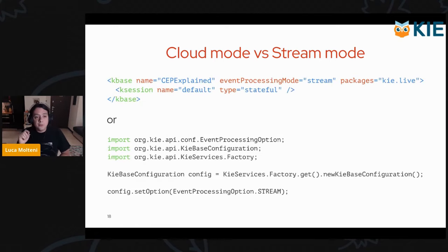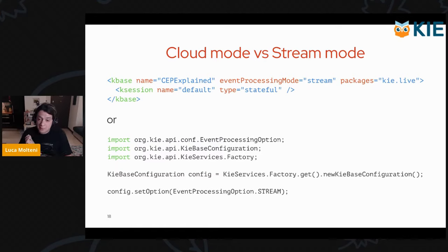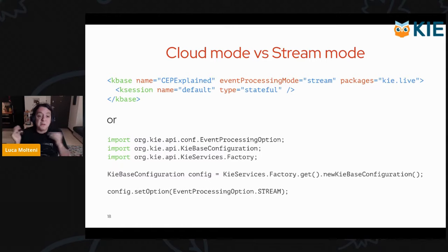To configure cloud mode or stream mode, you can do it in the KModule or in Java. Most of the time you would probably do it in the KModule XML, because in most projects you either have CEP enabled or you don't. There is a Java programmatic interface available as well for cases where you want to enable CEP programmatically.